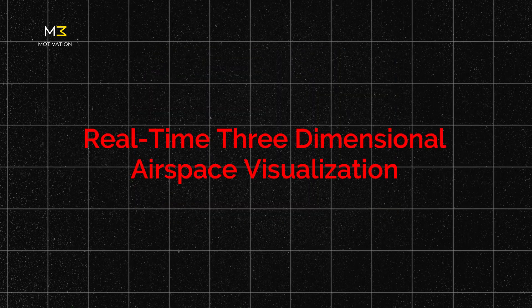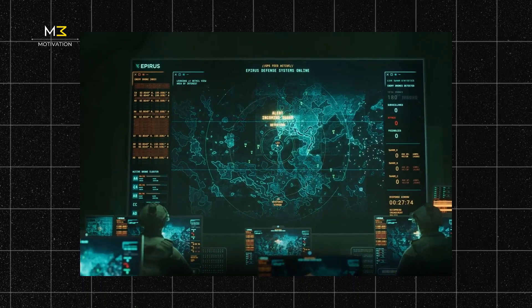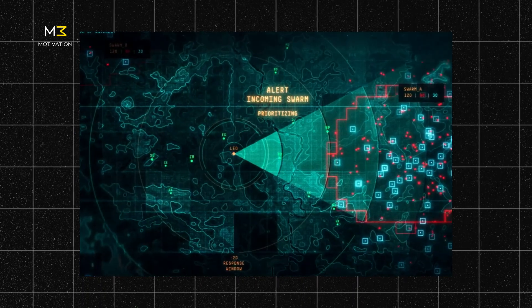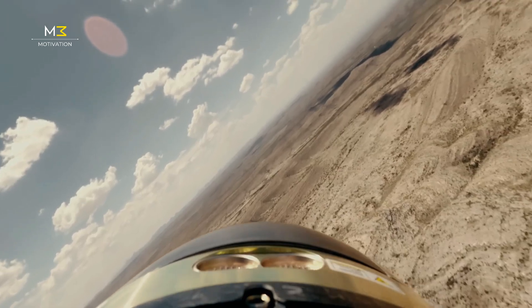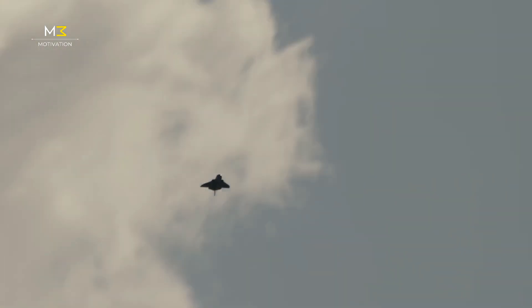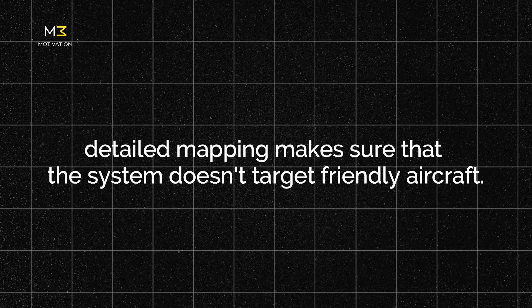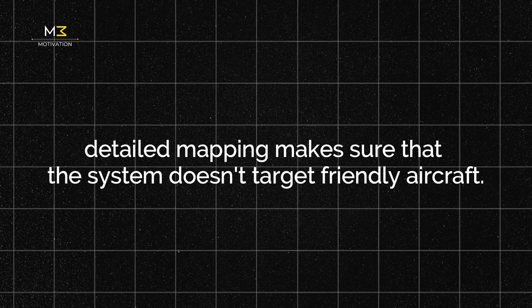Real-time 3D airspace visualization: The system fuses data from all sources to create a live 3D map of Indian airspace, accurately displaying enemy drones, missiles, and aircraft, as well as friendly units like Indian Air Force jets and civilian planes, and weather patterns to avoid false alarms. This detailed mapping allows the system to instantly distinguish between friend, foe, and neutral objects.